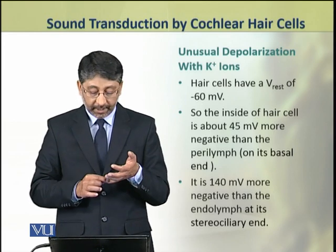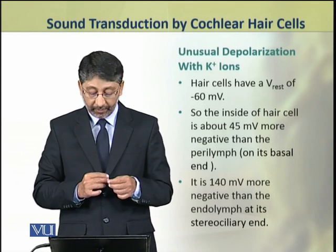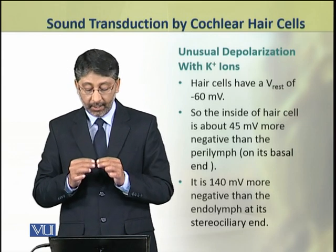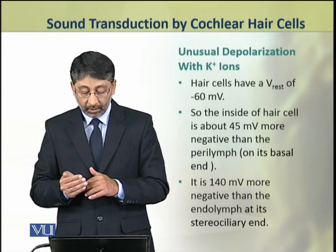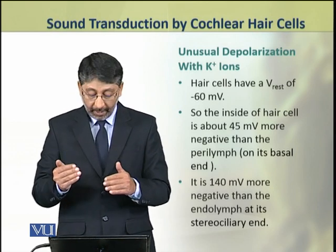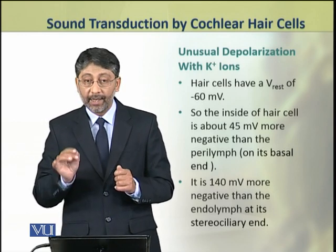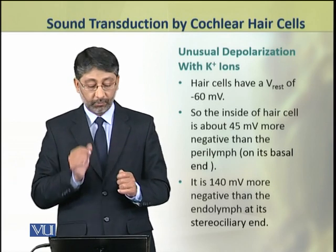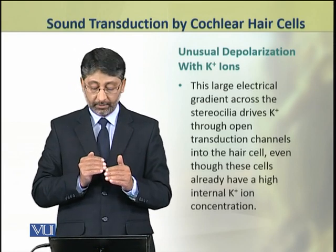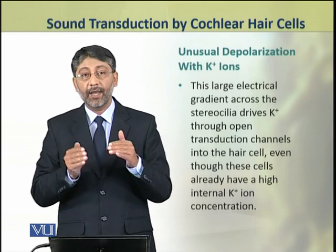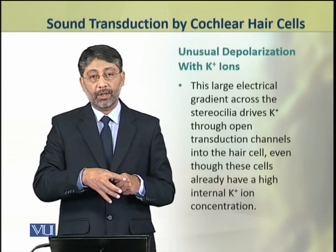The hair cells have a resting membrane potential of about minus 60 millivolts. This makes the hair cell about 140 millivolts more negative compared to the endolymph at the stereociliary end. This large electrical gradient across the stereocilia is the reason that drives potassium ions through the open transduction channels into the apical portion of the hair cells.